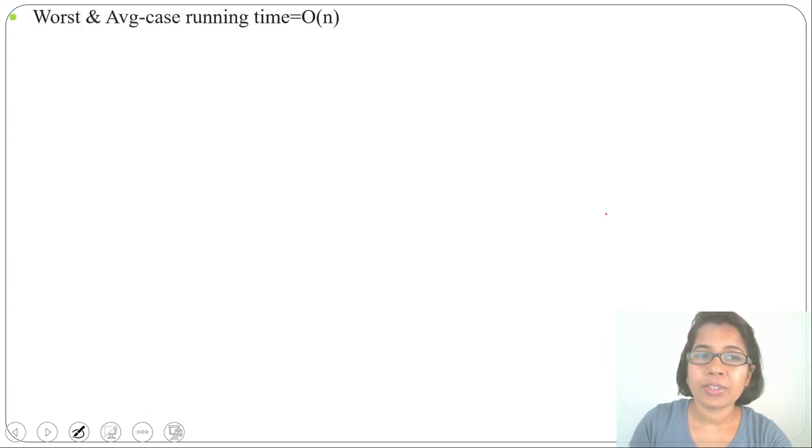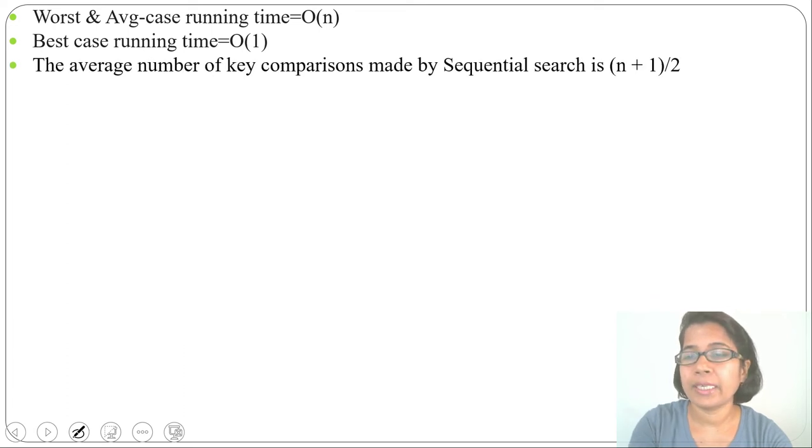We can say worst case or average case running time is O(n). And, best case will be O(1). If key is present at first position, that will be best case. If key is present at middle or at last, that is our average case and worst case. And, average number of comparisons is n plus 1 divided by 2.